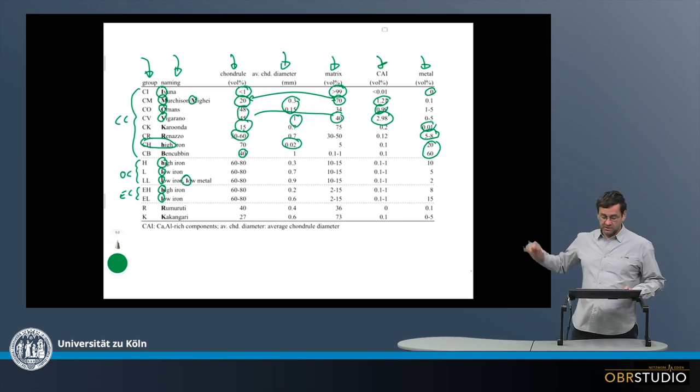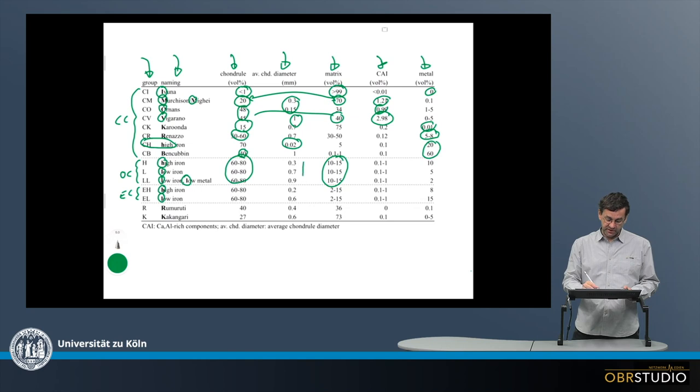Then in the ordinary chondrites, there are a lot of similarities. For example, chondrules are all between 60 and 80 volume percent and matrix between 10 and 15 volume percent. Chondrule diameters are systematically different, so they increase from H to L and LL from about 300 to 900 microns.